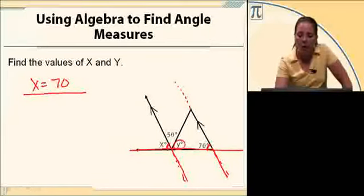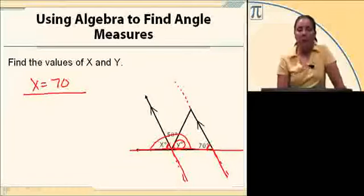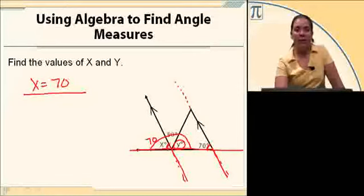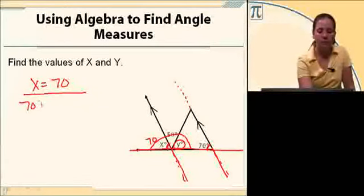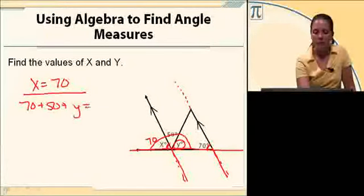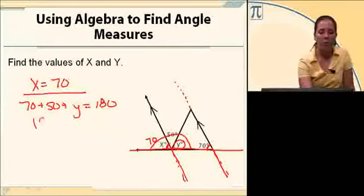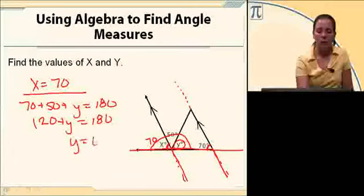And then to find the measure of y, I can see that these three angles have to be 180. I've got 70 plus 50, that's 120. 70 plus 50 plus y equals 180. 120 plus y equals 180. So y equals 60.